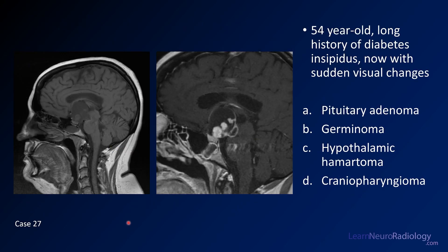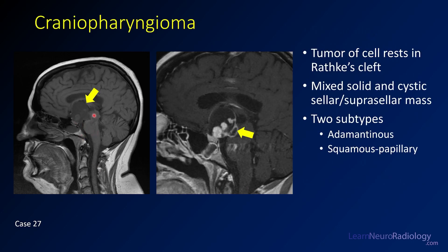Case number 27: a 54-year-old with history of diabetes insipidus, now with visual changes. Pre-contrast and post-contrast sagittal images. Choices are pituitary adenoma, germinoma, hypothalamic hematoma, or craniopharyngioma. The answer is craniopharyngioma. There's a nodular, cystic mass in the suprasellar and hypothalamic region with avid enhancement mixed with cystic non-enhancing areas — a classic appearance. Craniopharyngiomas have two subtypes: the adamantinomatous subtype, which tends to occur in younger patients, and the squamous papillary type, which tends to occur in older patients. This is probably a squamous papillary one.